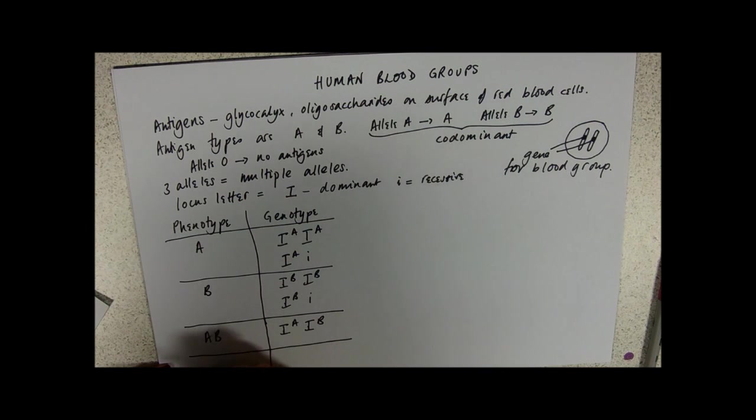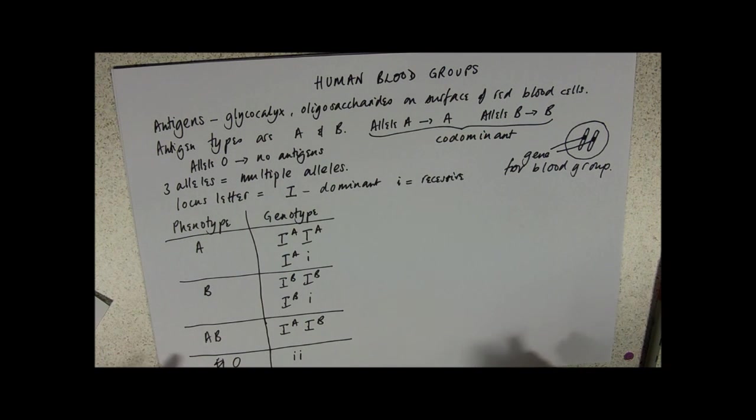And last but by no means least, because this is my blood group, you can have the two recessive alleles, and the blood group O. Around about 45% of the population of blood group O is the commonest one.